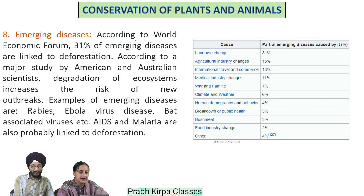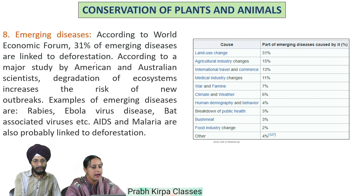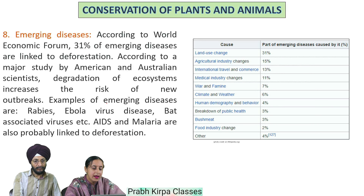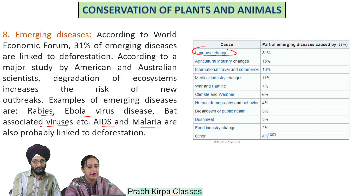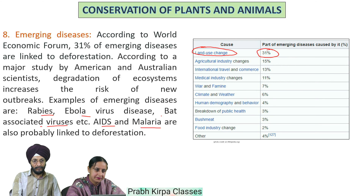According to the World Economic Forum, 31% of emerging diseases are linked to deforestation. According to a major study by American and Australian scientists, degradation of ecosystems increases the risk of new outbreaks. Examples of emerging diseases are rabies, Ebola virus disease, and bat-associated viruses. AIDS and malaria are also probably linked to deforestation.